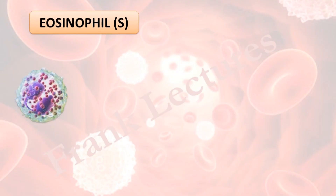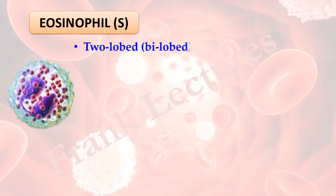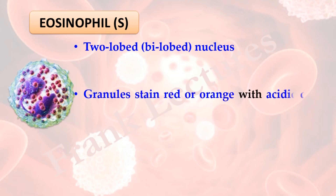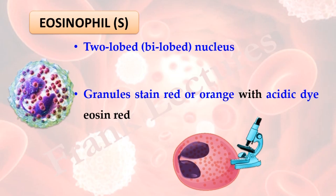Eosinophils have a two-lobed or bi-lobed nucleus, and these lobes are connected by a slender thread of chromatin. The term eosinophil — philos means to love, and eosin is an acidic dye — so the granules of eosinophils are acid loving, meaning they are readily stained by acidic dyes. Granules stain red or orange with acidic dye eosin. Under light microscope, eosinophils look like this.